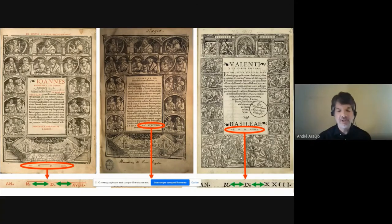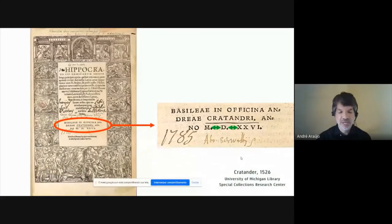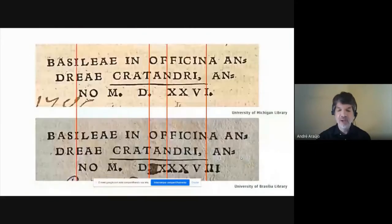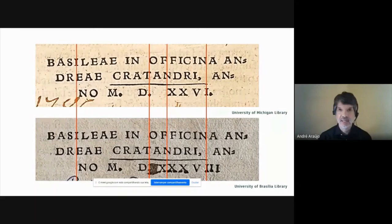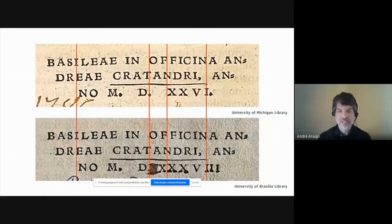By comparing the title page of the copy housed at the University of Brasilia with several other extant copies of the same title — like this one preserved at the University of Michigan — we can easily recognize this pattern when setting Roman numerals on the page. If we line up the letters that can be found on the title page of both copies, it becomes clear that the additional Roman numerals needed to change the date from 1526 to 1538 — in this case a letter X and two letters I — occupy exactly the unprinted area of the page. And these new letters representing new numbers were not printed, but drawn.